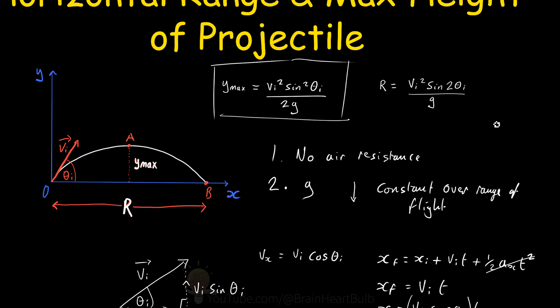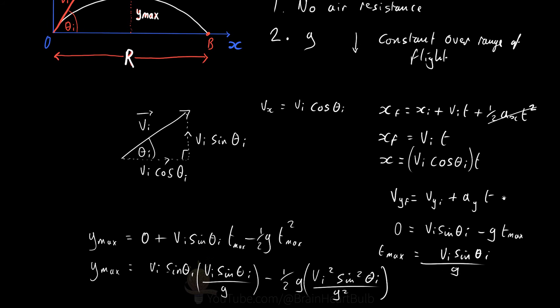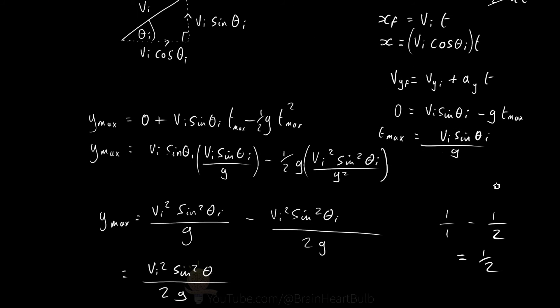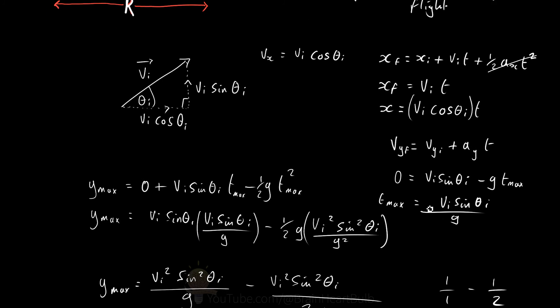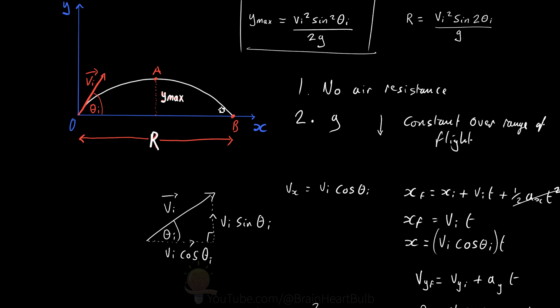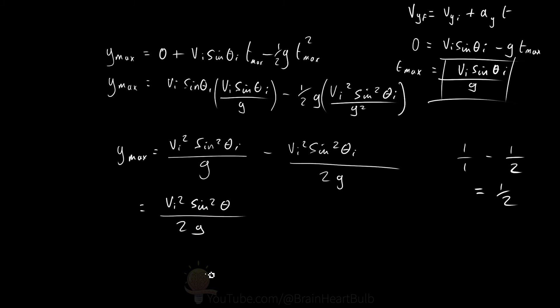Now, how do we get the range? We know the time it takes the projectile to reach maximum height is t_max. But to complete its full flight, it takes twice as long, because at maximum height the projectile is only halfway through its flight. So the total flight time is 2 times t_max, which covers the full range.